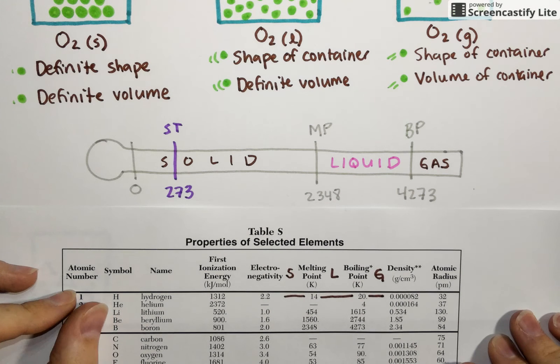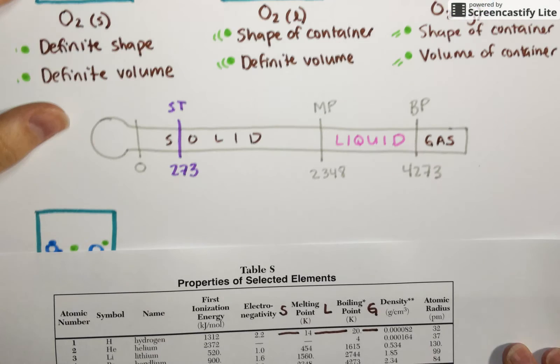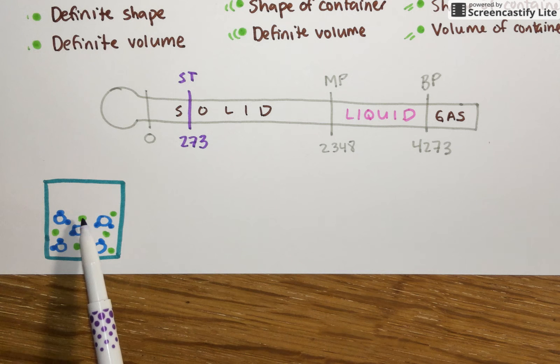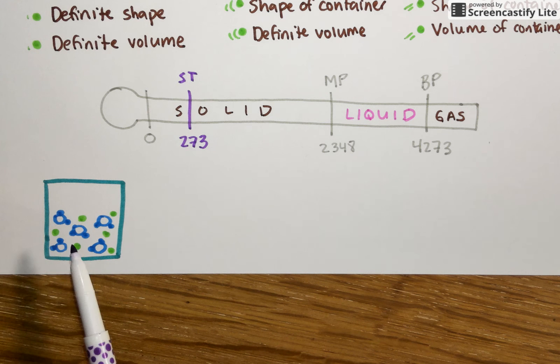The last thing I wanted to discuss was this idea of the aqueous mixture. This isn't necessarily a state of matter because what we would see this as is a liquid. But what we see going on in this diagram is that some pure substance has been dissolved in water.